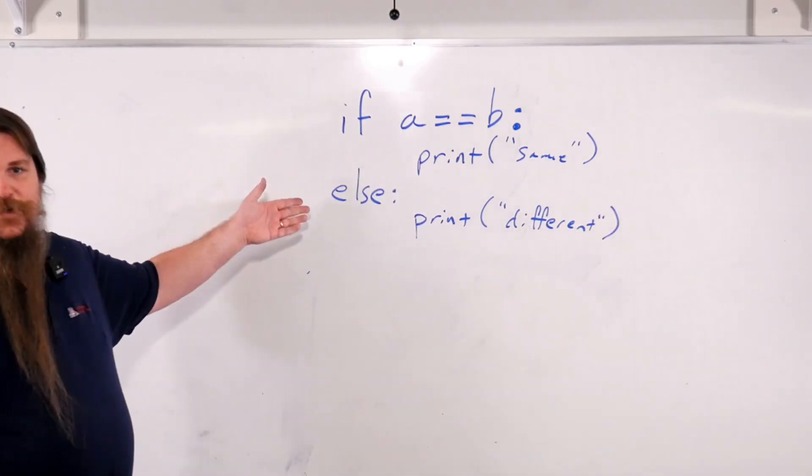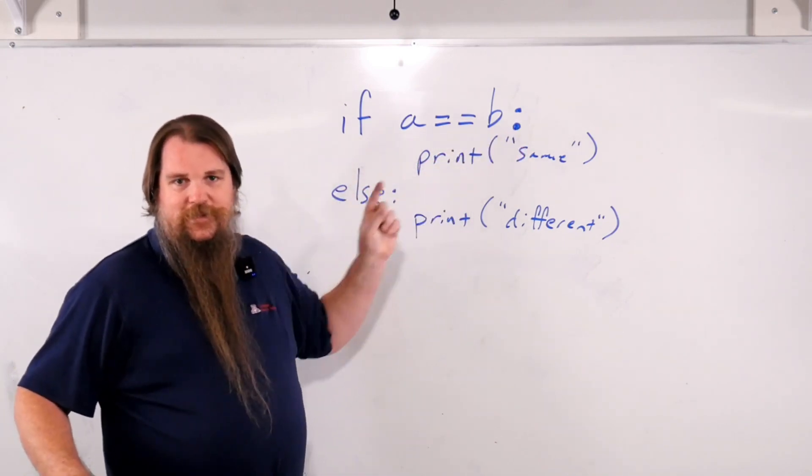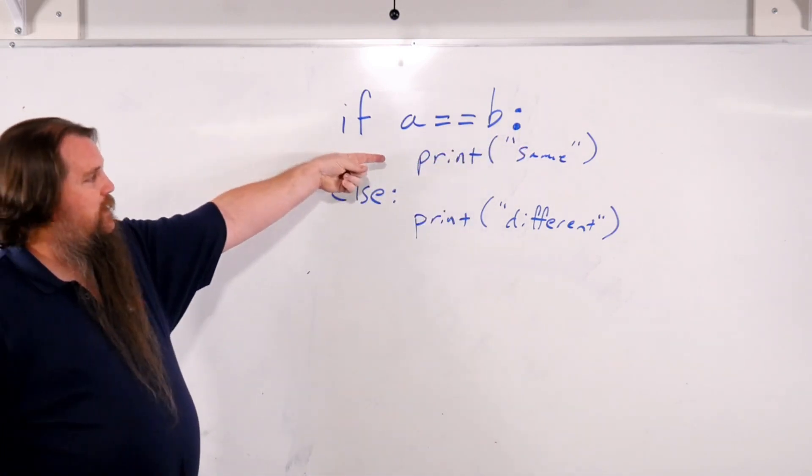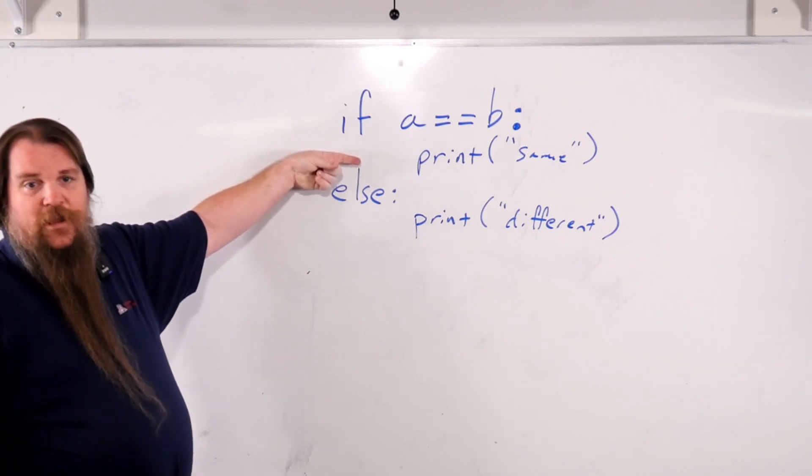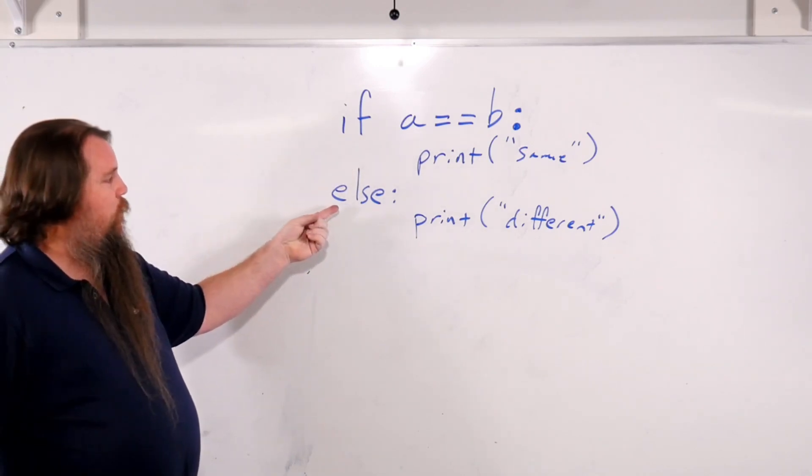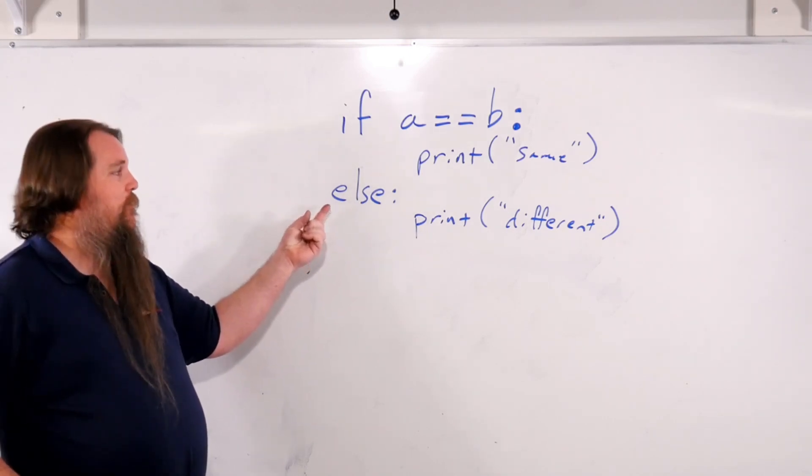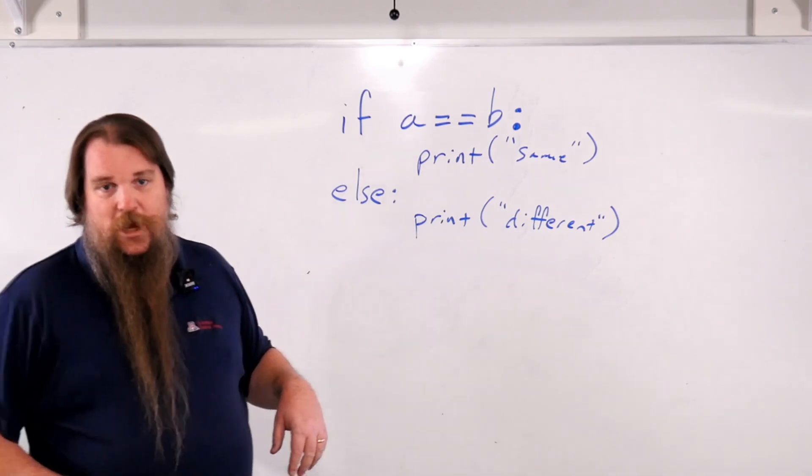So the way Python knows that you're inside a new block is it sees a colon and then it sees indented code. It knows that you're still inside that block as long as you're still indented. When you stop being indented, you go back out to the previous level, then it knows that you've left the block.